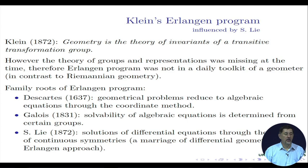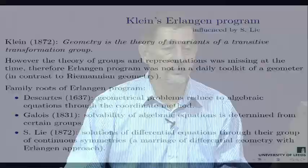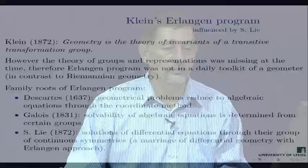The situation has changed. In the 20th century, huge progress was made in the classification of representations of groups, and we are now in a position where the Erlangen program can be used to derive new theorems and results. You will see that even for very classical objects — circles, parabolas, and hyperbolas — studied for more than 2000 years, using the Erlangen approach and our current knowledge of group theory, we are still able to find new theorems.